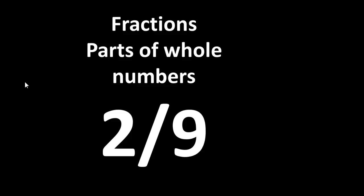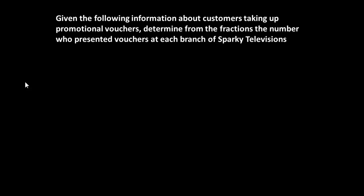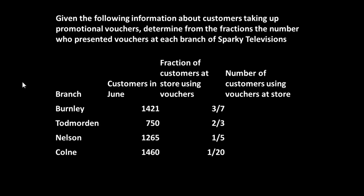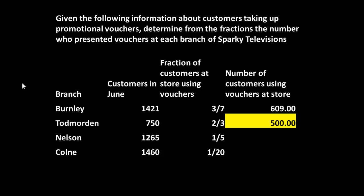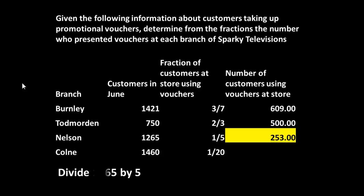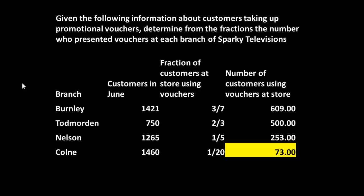Fractions are parts of whole numbers. The top part is called the numerator and the bottom part is the denominator. Given the following information about customers taking up vouchers, we need to determine the actual number of people who presented vouchers. We have customers in store and the fraction of customers using vouchers. At Burnley there were 1,421 customers, three-sevenths of whom used vouchers — that works out as 609 customers. I divided 1,421 by 7 and then multiplied by 3. At the second store I divided 750 by 3 and multiplied by 2. At Nelson I divided 1,265 by 5 and multiplied by 1. And at Colm I divided 1,460 by 20 and multiplied by 1. So that's how I turned my fractions into numbers.